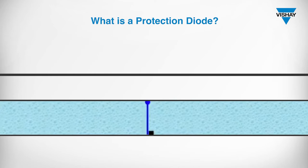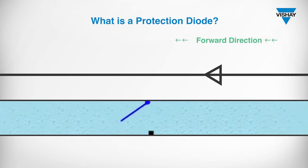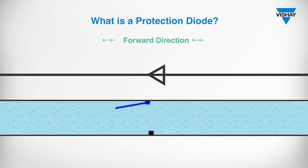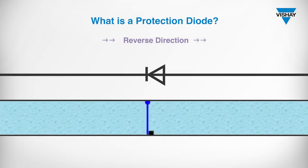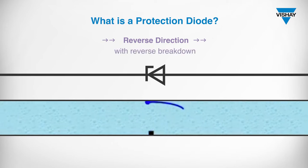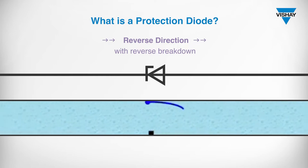How is a protective diode described? The diode symbol points to the forward direction — in this case the diode conducts the current. The reverse direction, as indicated by an additional line in the diode symbol, blocks the current flow. As soon as a defined voltage is reached, as indicated by the hook in the diode symbol, the diode conducts the current again. This behavior is called a one-way avalanche breakdown.